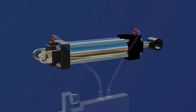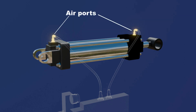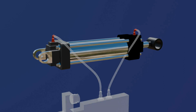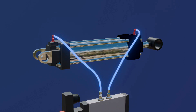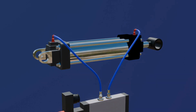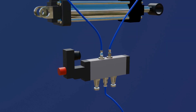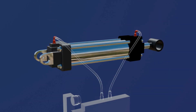On the top of the front and end cap, these are the air ports, and their function is to provide a way for airflow in and out. These tubes are connected to the air ports, and they connect the cylinder to the valve. We'll talk about the valve later.